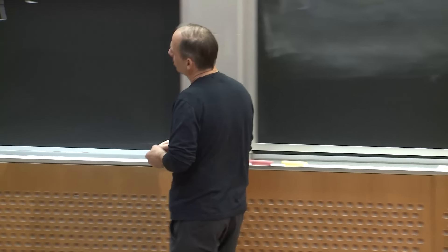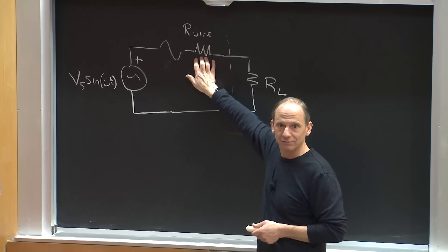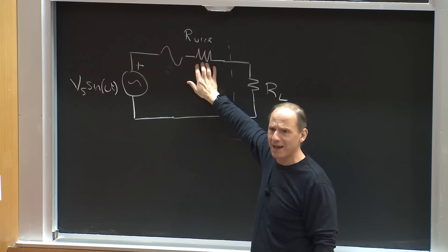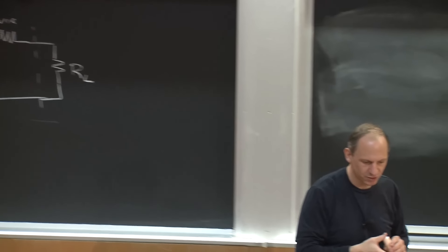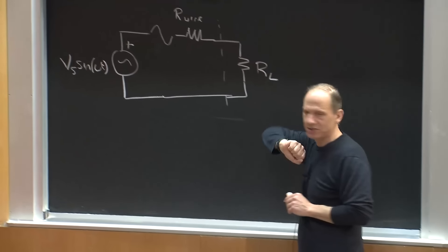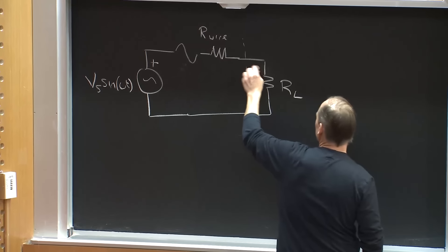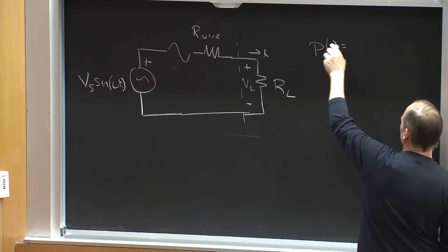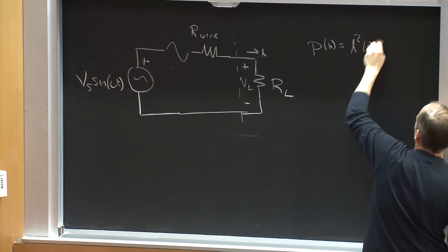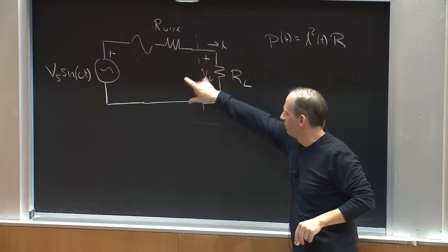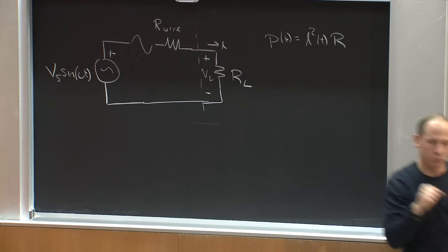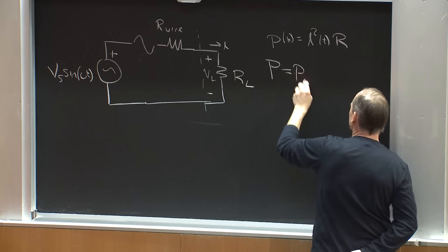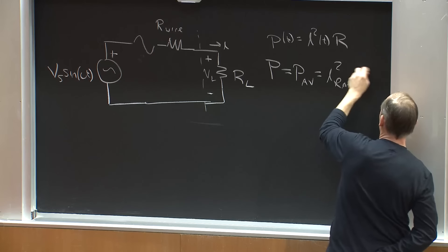For most purposes we can usually ignore the wire resistance. So let's pretend the wire resistance is zero, because if you're burning lots of power in the wire you're probably unhappy anyway. What is the power going into my space heater? P(t) equals I²(t) times R. Since V_L ≈ V_S ignoring wiring resistance, the average power P_av is simply I_RMS² times R_L.